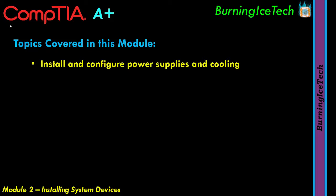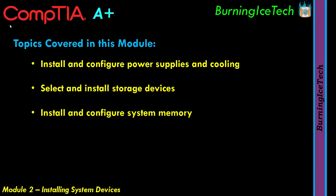The first one would be install and configure power supplies and cooling — we're going to be talking about power supplies and various kinds of cooling like fans and liquid cooling. Then we'll move on to the second main section: select and install storage devices, so that's going to be about hard drives and that kind of stuff. Section 3 will be install and configure system memory, which is going to be in and around RAM but not limited to RAM. And then we'll move into the fourth section: install and configure CPUs.